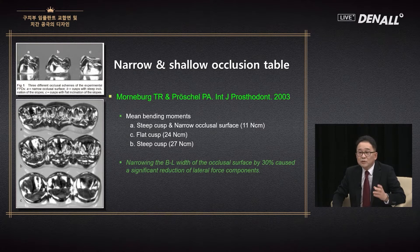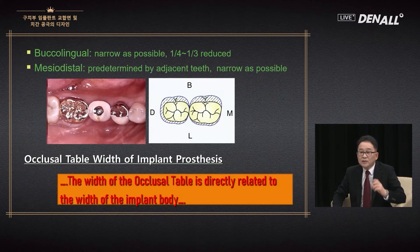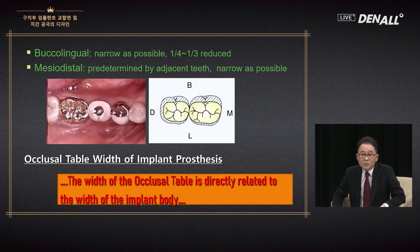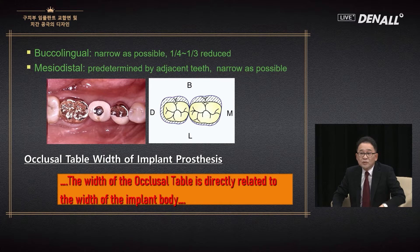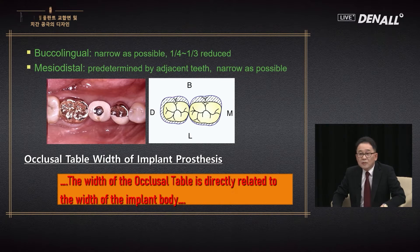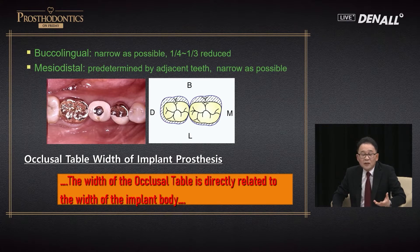Because of this, we try to make the occlusal table small. Usually, buccolingually one-fourth or one-third should be reduced, and mesiodistally it should be as narrow as possible. So implant prosthesis is made in small size.